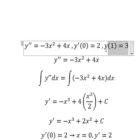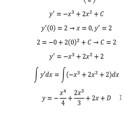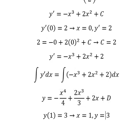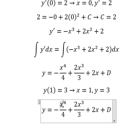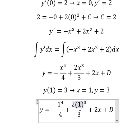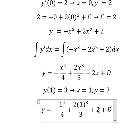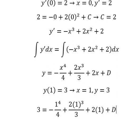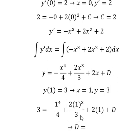Now we have the conditions. That means when s equals number 1, y equals number 3. So we put number 1 here, and number 3 here, so we can find the value of d, and we have 7 over 12.